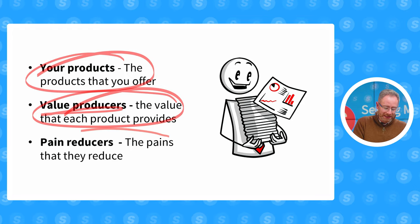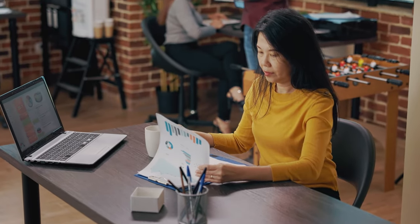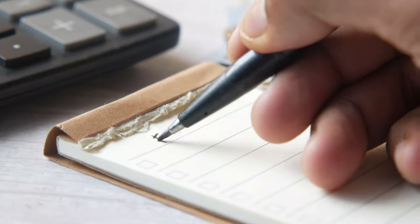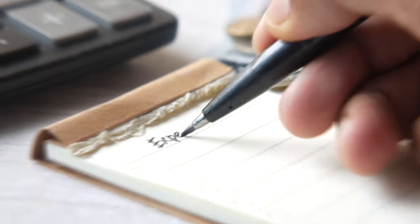Then again, for each one of the products or services that you list down, write out any pain reducers that they have. Do they reduce the pain of administration or paperwork? Do they reduce the pain of financing in an organization? Whatever it is, write down both the value producers and the pain reducers of each one of your products.